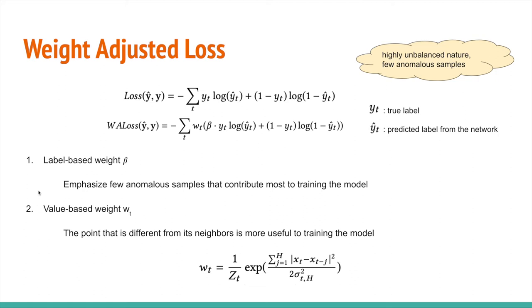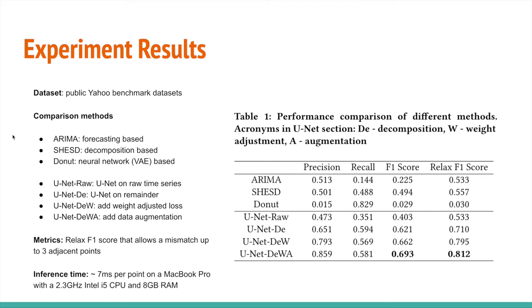Here, we propose two adjustments, one called label-based weight. The essential idea is to give the anomaly samples more weight. We also propose value-based weight. Here, the idea is that the point that is different from its neighbors will contribute more to training the model.